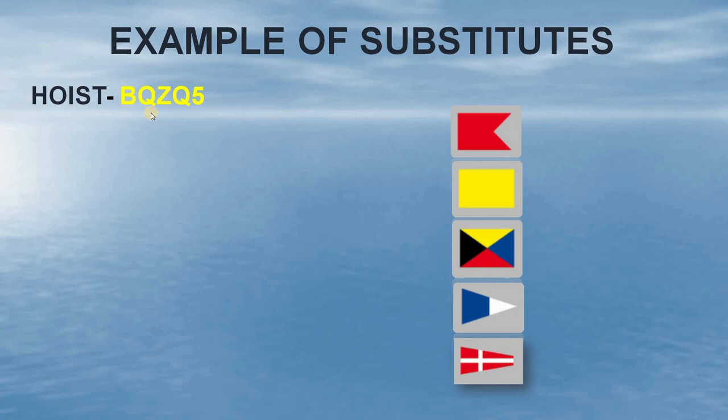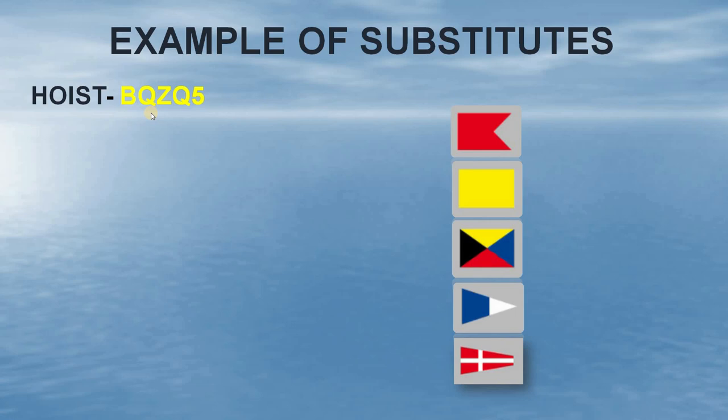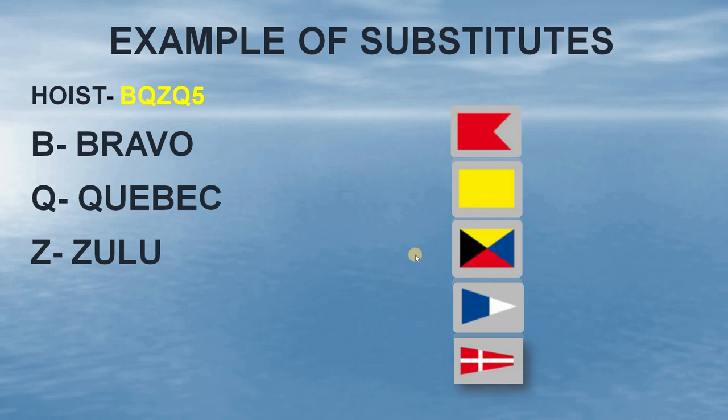In the next example, the hoist is of Bravo Cubic, Zulu Cubic, Penta 5. First we have the Bravo flag, followed by the Cubic flag, then the Zulu flag. Now we want the Cubic flag to be repeated, but since we have only one Cubic flag on board, we will again make use of the substitutes. In this case, the Cubic lies at the second position in the hoist, so we will make use of the second substitute flag, followed by the Penta 5 flag.